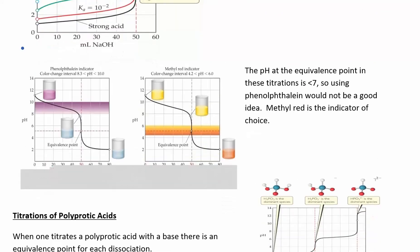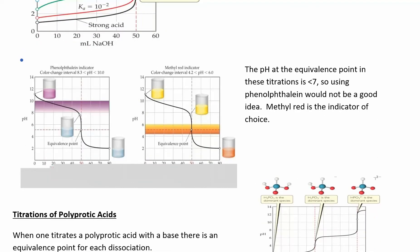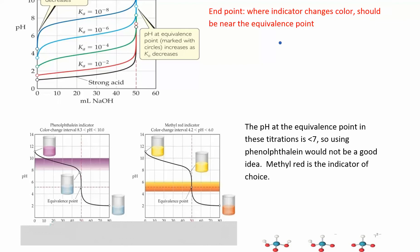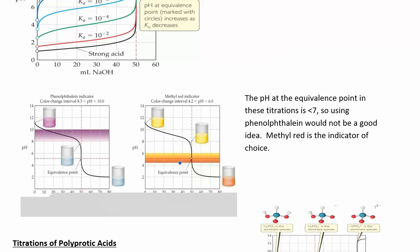You can also do it the other way — start with the base and titrate with an acid. You'll see it start off at a high pH and then decrease. You'll need to use a different indicator, because the endpoint — that's where the indicator actually changes its color — you want that to be really close to the equivalence point. It's indicating something when the pH is changing.